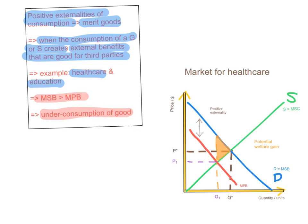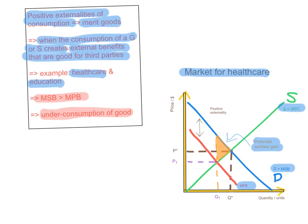The government actually wants to increase consumption of the good. Looking at the diagrammatic representation — the market for healthcare — you've got the supply curve, which is the marginal social cost curve, and the demand curve, which is the marginal social benefit curve. Because the marginal social benefits are higher than the marginal private benefits, the ideal quantity that should be provided is Q star — the intersection of marginal social cost and marginal social benefit at a price of P star. But what's actually being provided is Q1 at price P1. There is a potential welfare gain that could be gained by consuming more, shown by the yellow or orange triangle. The vertical distance between the marginal social benefit curve and the marginal private benefit curve is the positive externality that society is missing out on because of this under-consumption.